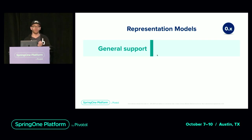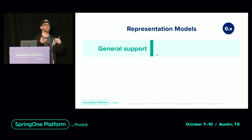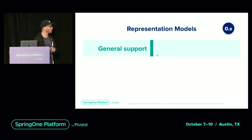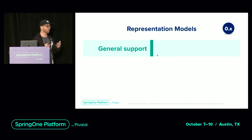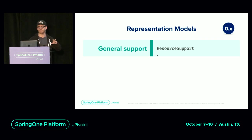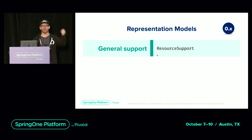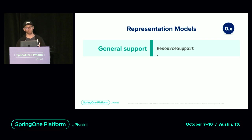If you take a step back and think about that order JSON document, getting Jackson to serialize an order class instance is pretty simple. If you now decide you want to add links to that representation, you'd come up with some wrapper or decoration of that order that allows you to add those links. That's exactly what we had in the 0.x timeline — a class called ResourceSupport, basically a container around the list of links which you could add and remove links from.